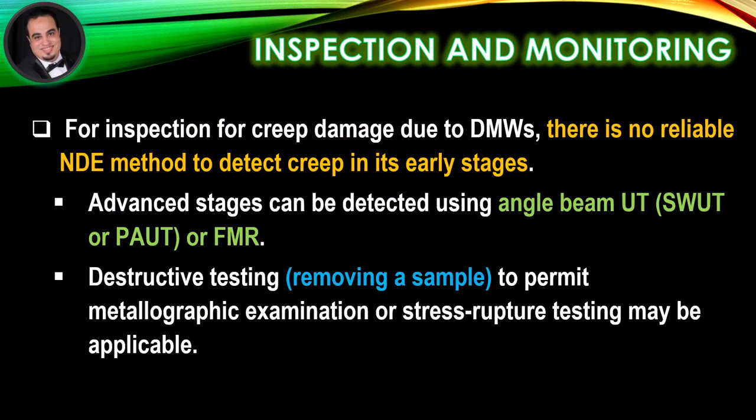For inspection for creep damage due to dissimilar metal welds, there is no reliable non-destructive examination method to detect creep in its early stages. Advanced stages can be detected using angle beam ultrasonic testing, shear wave ultrasonic testing, phased array ultrasonic testing, or field metallographic replication. Destructive testing — removing a sample to permit metallographic examination or stress rupture testing — may also be applicable.